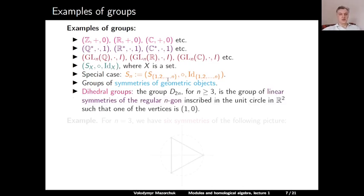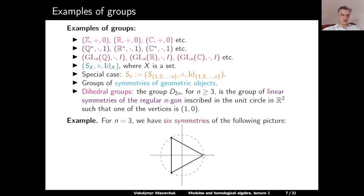Here is a special case: the dihedral group D_{2n}, where n ≥ 3. This is the group of linear symmetries of the regular n-gon inscribed in the unit circle in ℝ², such that one of the vertices is at (1, 0). For example, for n = 3 we have the triangle inscribed in the unit circle with a vertex at (1, 0). This has three rotational symmetries and three reflection symmetries — reflecting with respect to three different axes. So this group D₆ has six elements.